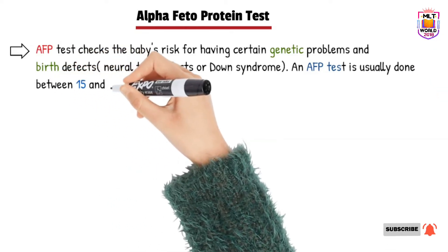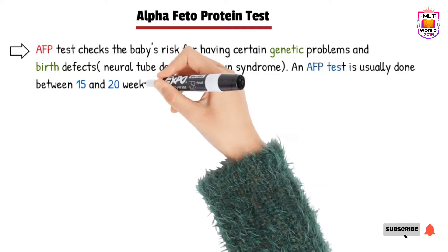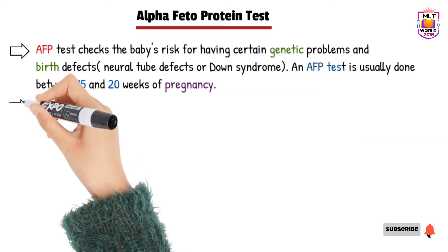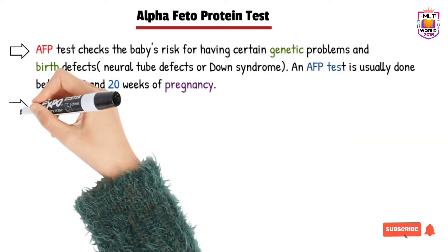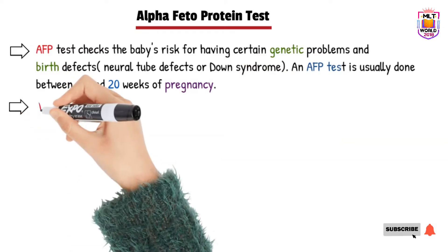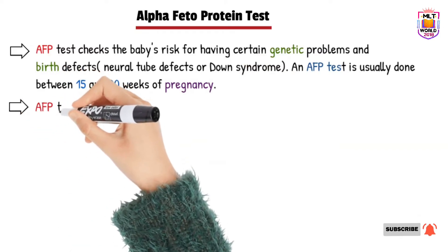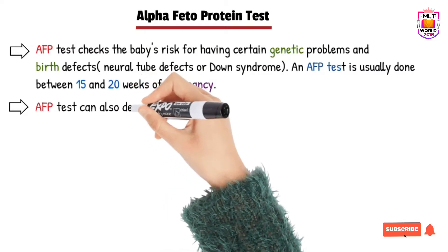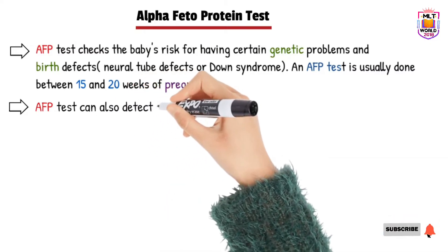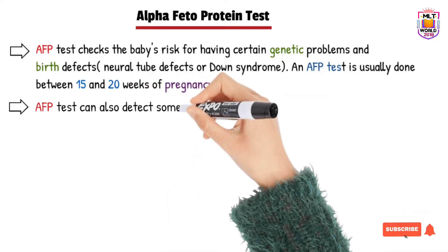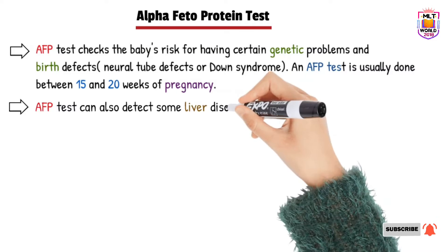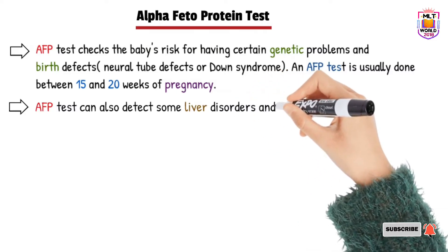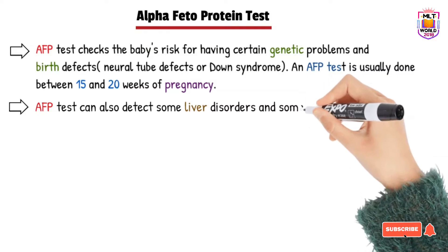The second reason to check AFP is to detect any liver disorder or cancer in adults, because AFP is a protein that is made by the liver.